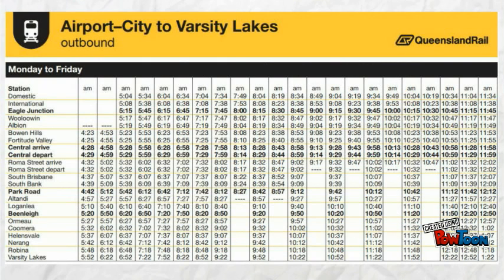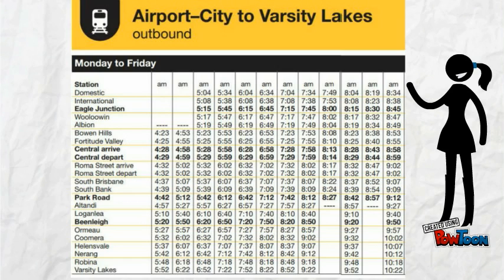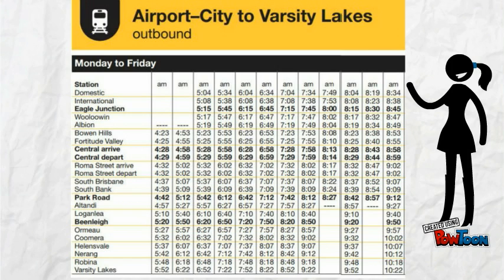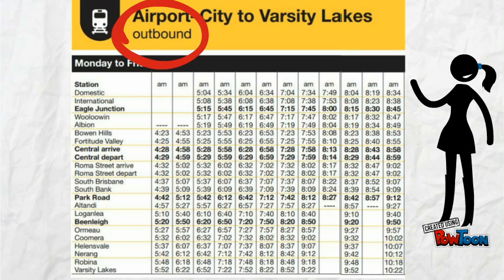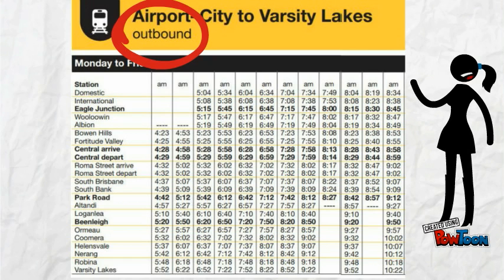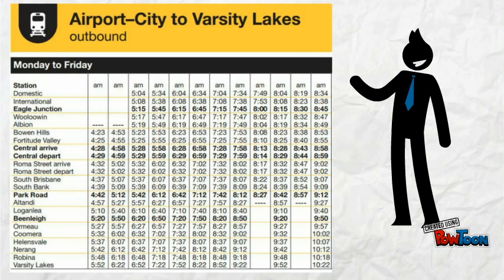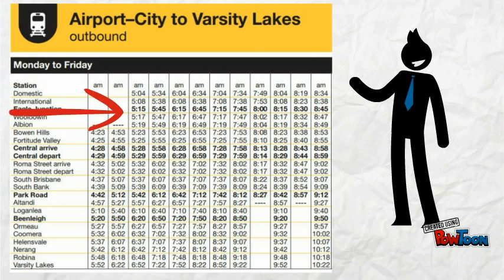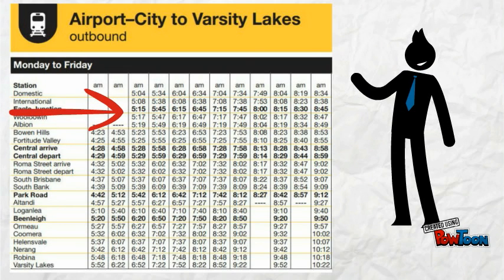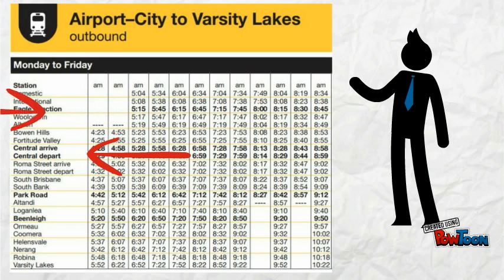Let's have a closer look at the train timetable. All timetables are similar. This timetable is telling us that we are heading outbound, so we are leaving Brisbane City to our destination. You will notice that the scheduled times are in the rows, which tells us the train will arrive at each of these destinations. You can see the destination on the far left hand side.